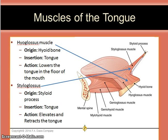The hyoglossus muscle originates on the hyoid bone and inserts into the tongue — glossus for tongue. Its action is to lower the tongue in the floor of the mouth. The styloglossus originates in the styloid process and inserts into the tongue. Its action is to elevate and retract the tongue. Neither of these muscles is attached to the mandible.